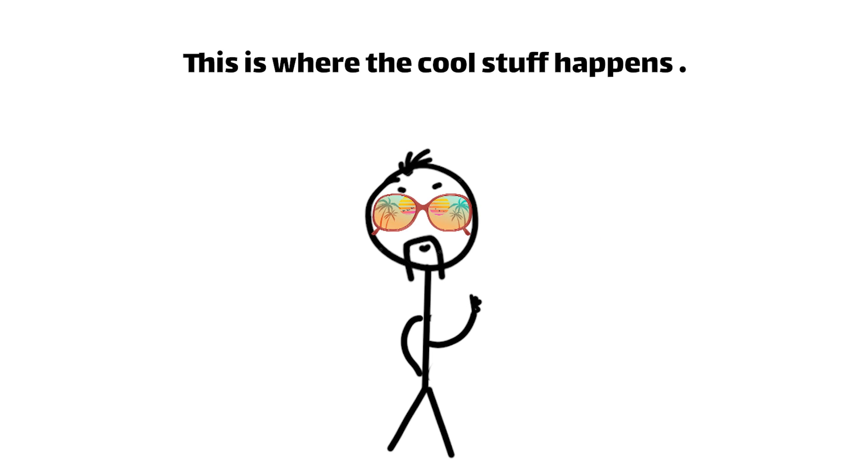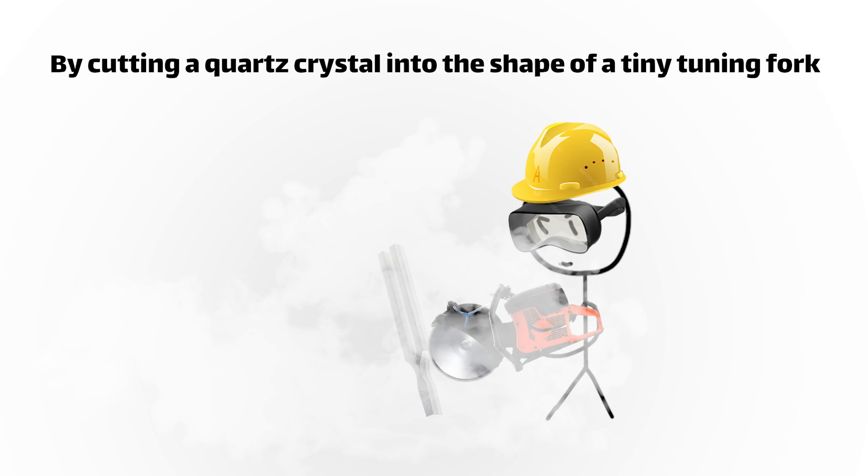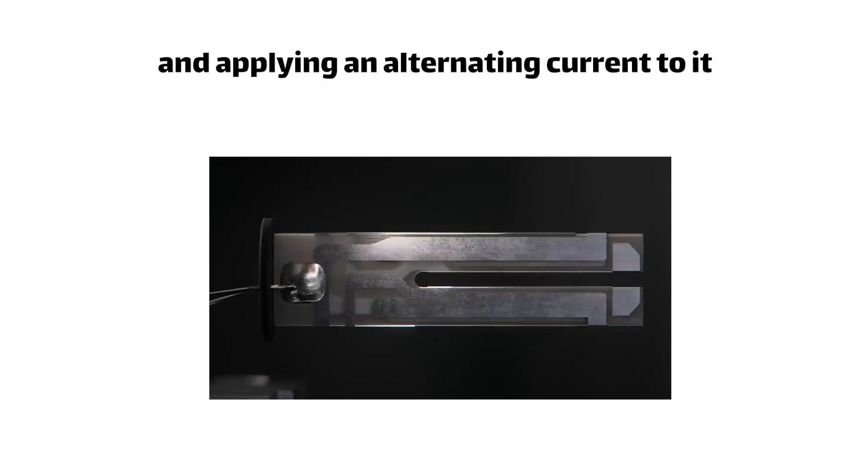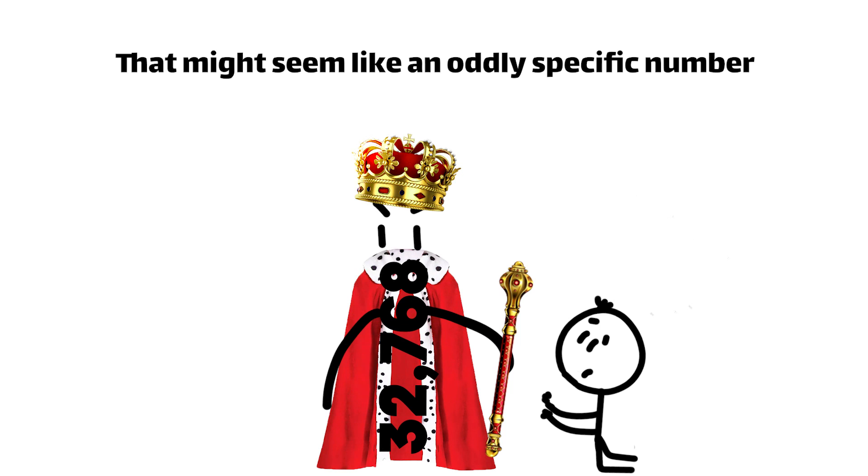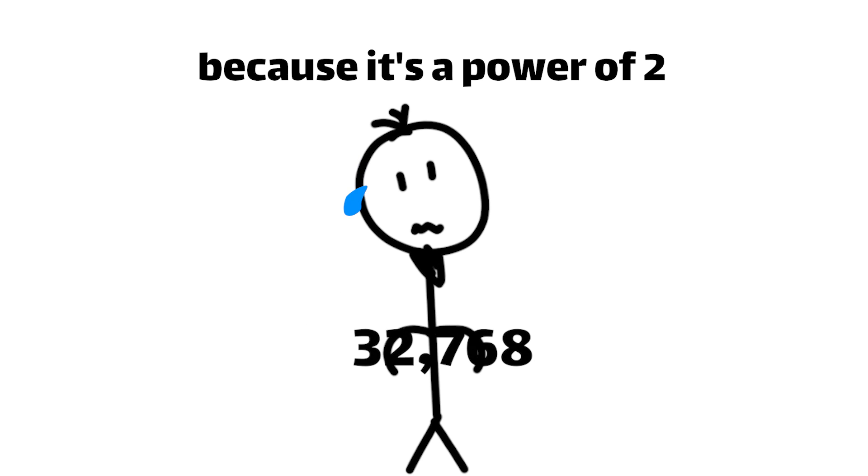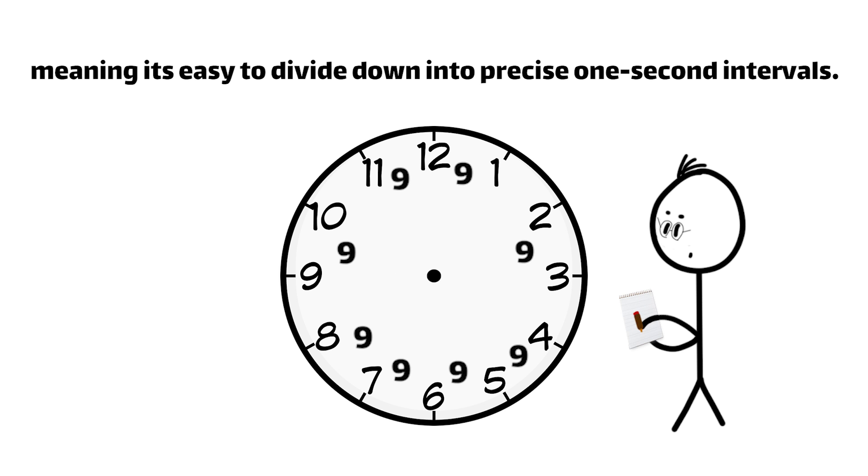This is where the cool stuff happens. By cutting a quartz crystal into the shape of a tiny tuning fork, and applying an alternating current to it, it can resonate at an incredibly stable frequency, usually 32,768 times per second. While oddly specific, that number is chosen because it's a power of 2, meaning it's easy to divide down into precise one-second intervals.